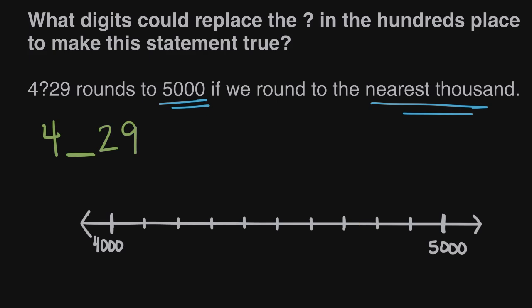But if for example we had a point that was say somewhere like this, this point's nearest thousand would be 4,000. This point would round down to 4,000 because we can look and see it is closer to 4,000 than it is to 5,000. It is nearer.